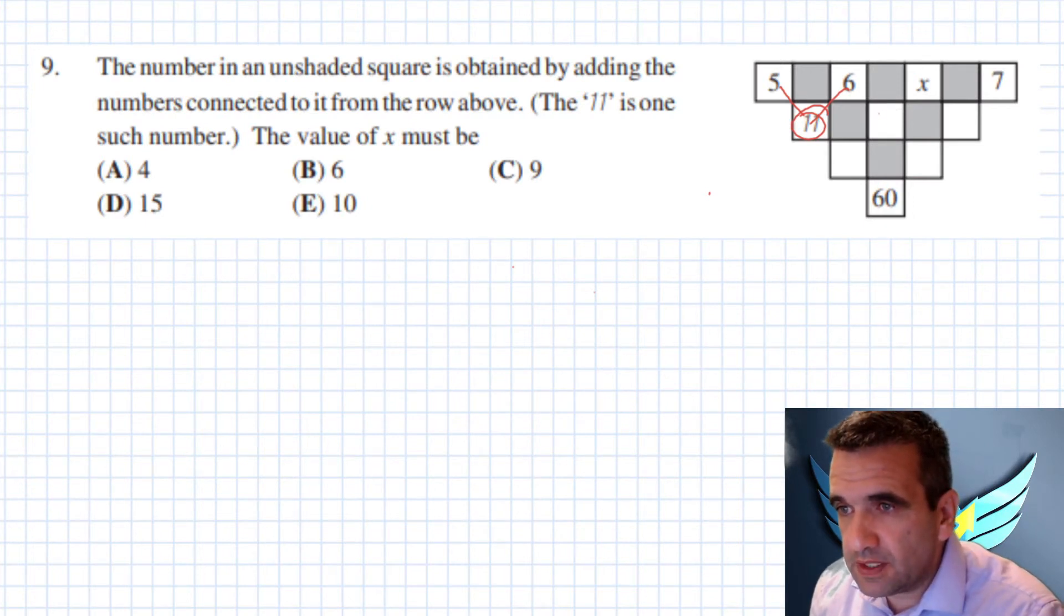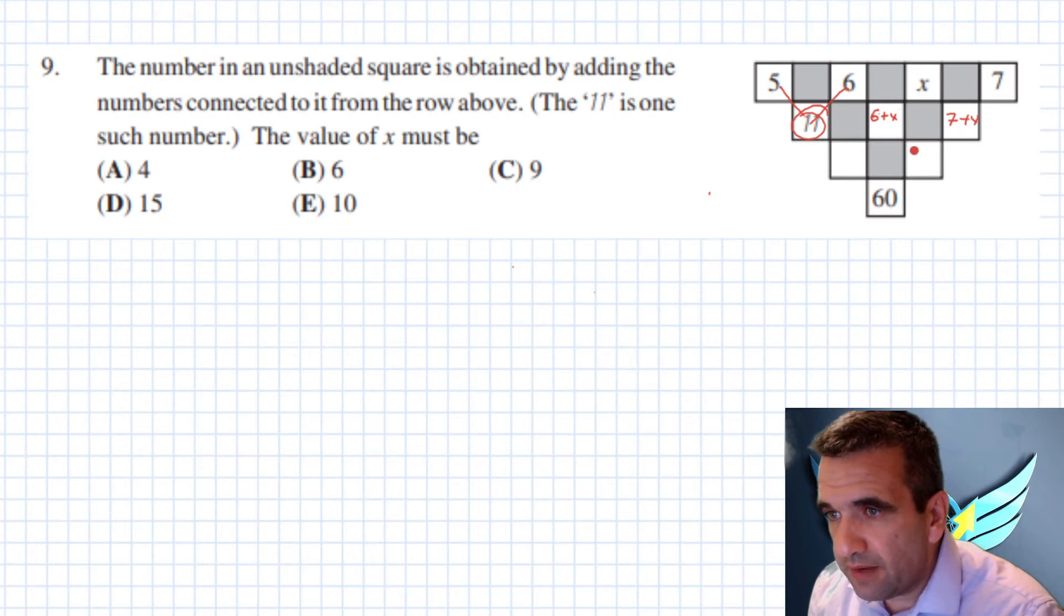So in this cell value will be 6 plus x, here will be x plus 7. So here we have, we add these two cells, so it will be 13 plus 2x.